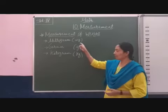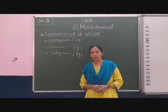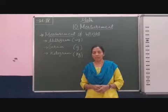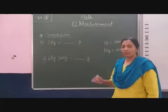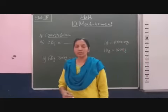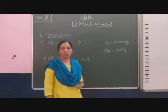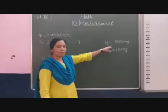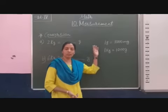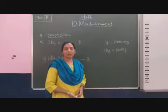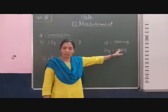We write milligram with the small letter 'mg', gram with the small letter 'g', and kilogram as 'kg'. Now, before going to solve the questions, the conversion: one gram is equal to one thousand milligrams. So when we convert grams into milligrams, we multiply by one thousand, because one gram is equal to one thousand milligrams.